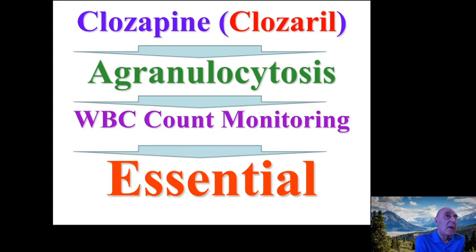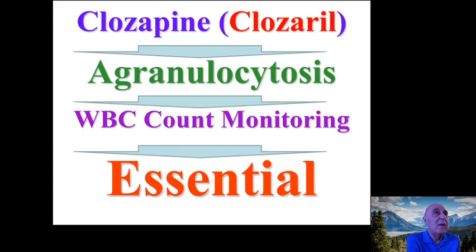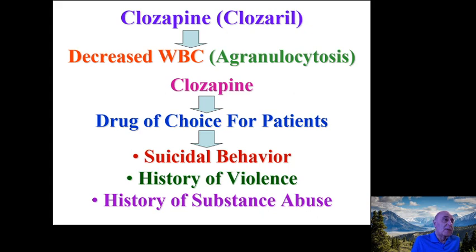If the white blood cell count is acceptable, the patient receives a green light to continue clozapine. If the count is low, they receive a red flag and must stop the medication until the count returns to normal. Clozapine is the drug of choice for specific patients — those with suicidal behavior, a history of violence, or a history of substance abuse.